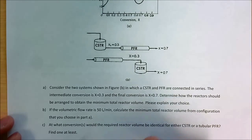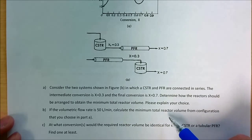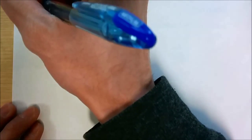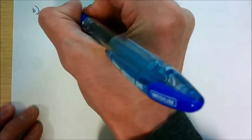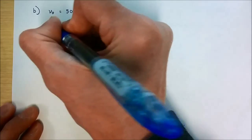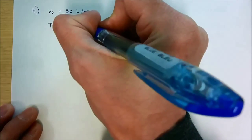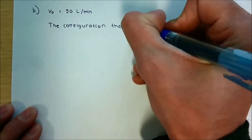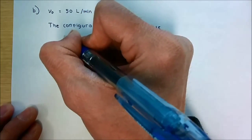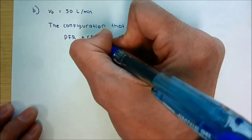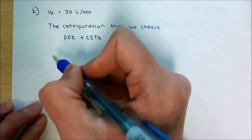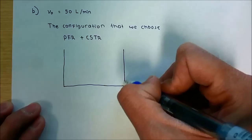For part B, the volumetric flow rate is 50 liters per minute. We need to calculate the minimum total reactor volume from the configuration chosen in part A, which is PFR followed by CSTR. The PFR operates from X = 0 to X = 0.3, and the CSTR operates from X = 0.3 to X = 0.7.